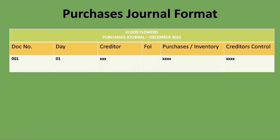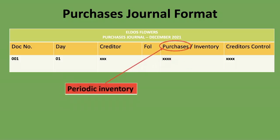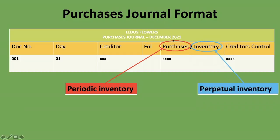The next column is 'Purchases' or 'Inventory'. Purchases is used when the company uses the periodic inventory system, while Inventory is used when the company uses the perpetual inventory system. So if you see a purchases journal with this column written as 'Purchases', the company uses the periodic inventory system; if it says 'Inventory', it uses the perpetual inventory system.